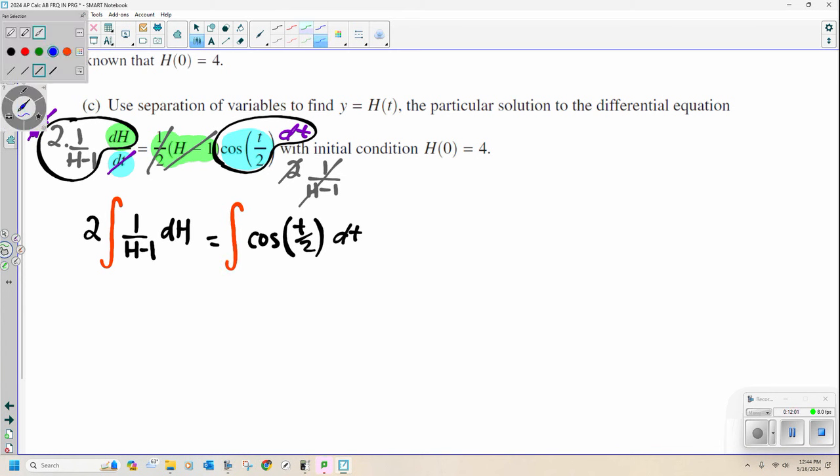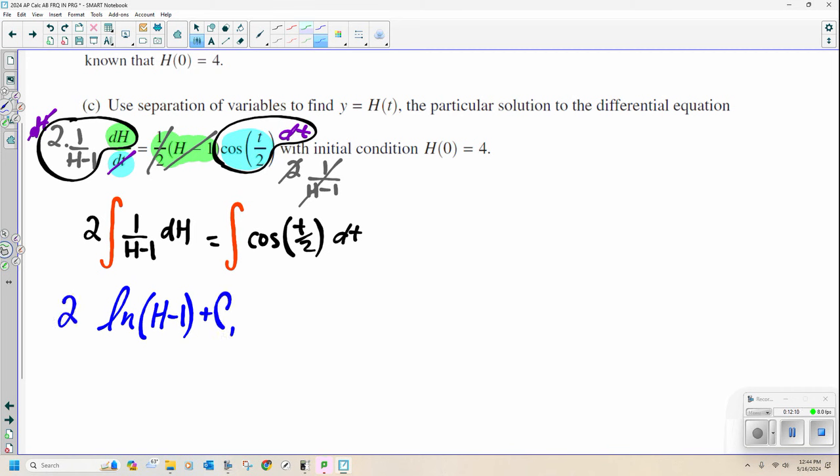The left side, pretty simple. If you know your rules, the natural log of h minus 1 plus some constant 1 times 2, right? We can't forget. Boom. Our constant 2 there. All right? So here we go.